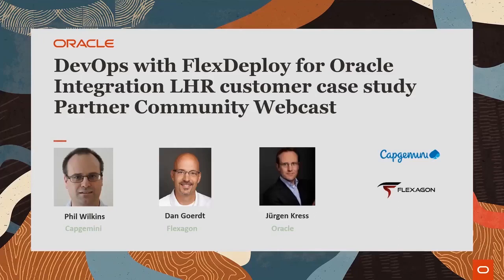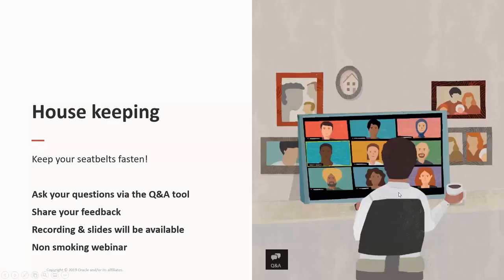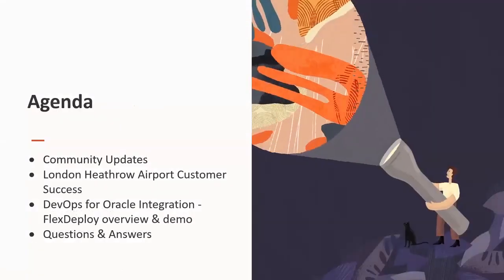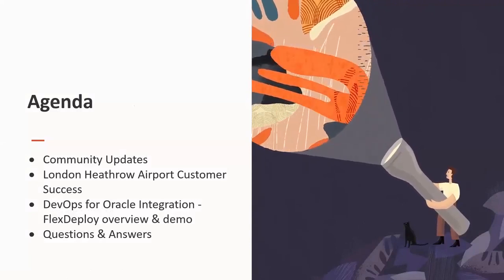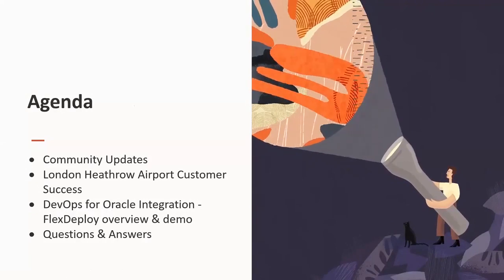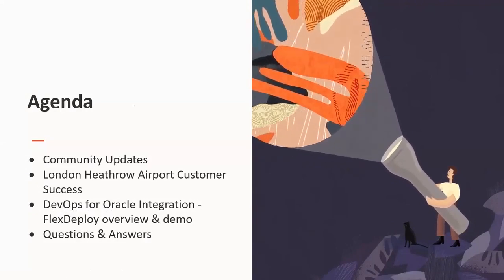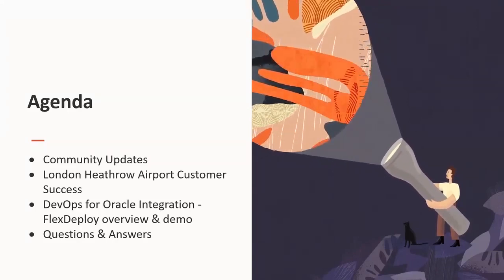The objective of today's webcast is to share DevOps best practices for Oracle Integration. Please feel free to post your questions via the conference Q&A tool or Twitter hashtag PaaSCommunity — at the end of the webcast we will answer them. Slides will be available at our VideoHub channel and the community website. Today's agenda: after community announcements, Phil will present the Heathrow customer case and Capgemini Innovation Platform, Dan will introduce FlexDeploy including a live demo, and we'll wrap up with Q&A.